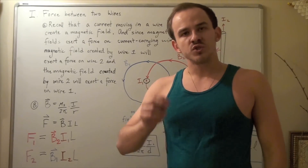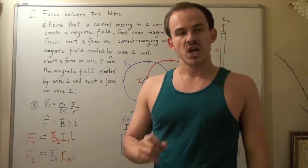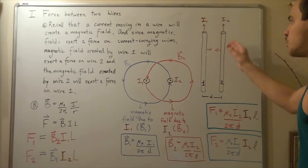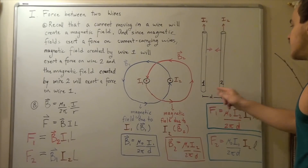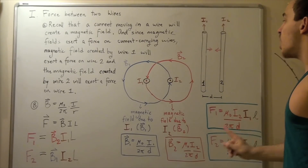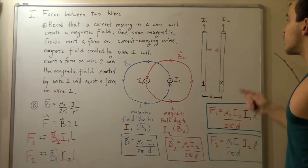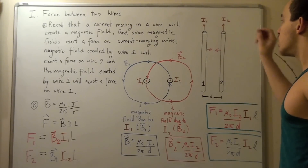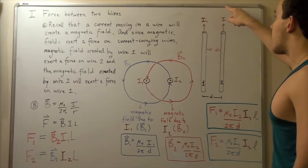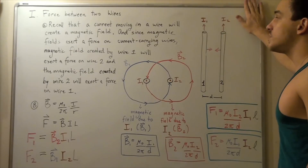In this lecture, we're going to discuss the forces between two parallel wires. Suppose we have two wires parallel to one another and at distance D apart. Wire 1 has a current I1 flowing upward, and wire 2 has a current I2 flowing upward. We assume the magnitudes of our currents are exactly the same, so I1 equals I2.